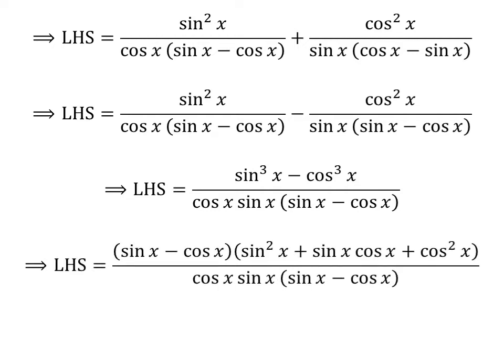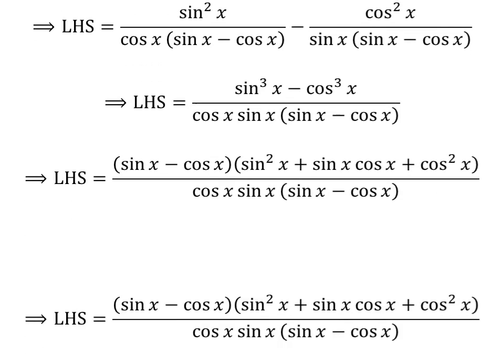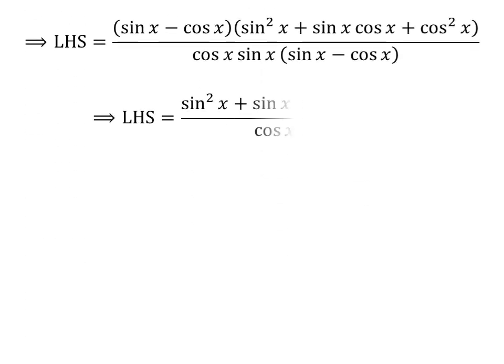Here, cube of sin of x minus cube of cosine of x is factorized as sin of x minus cosine of x, times square of sin of x plus sin of x times cosine of x plus square of cosine of x. Here I have cancelled out the common factor of sin of x minus cosine of x in the numerator and the denominator.